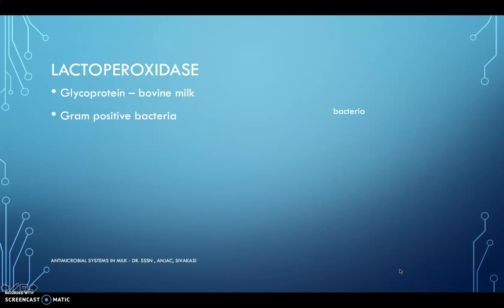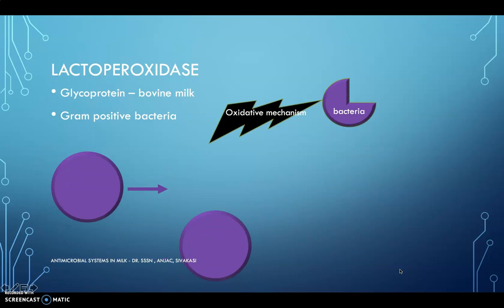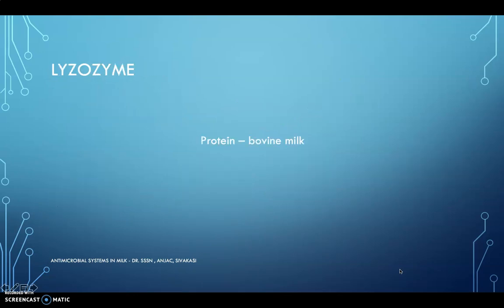Lactoperoxidase is a glycoprotein present in bovine milk. It especially inhibits gram-positive bacteria. Two types of bacteria exist based on their cell wall: gram-negative and gram-positive. Lactoperoxidase inhibits gram-positive bacteria through oxidative mechanisms — it converts H2O2 (hydrogen peroxide) into water molecules and converts thiocyanate into hypothiocyanate. H2O2 plays the main role in inhibiting such bacteria.